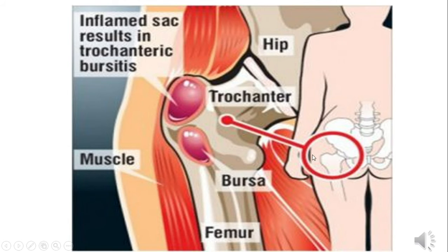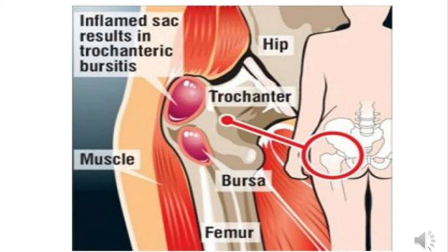Trochanteric bursitis occurs when gluteus maximus is used continuously — climbing stairs, carrying heavy weight, or walking on an inclined plane for a long time. This causes inflammation of the trochanteric bursa, presenting as pain on the lateral side of the hip that is tender to touch.